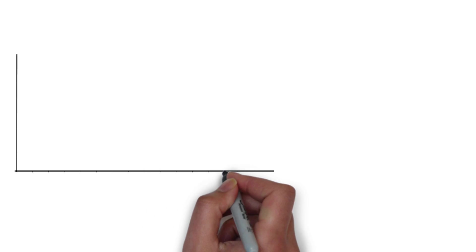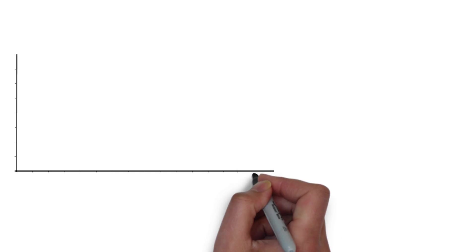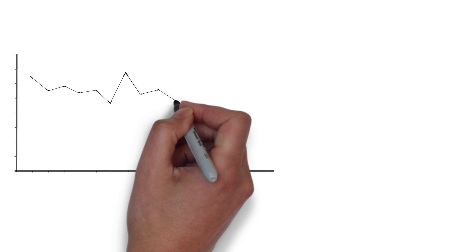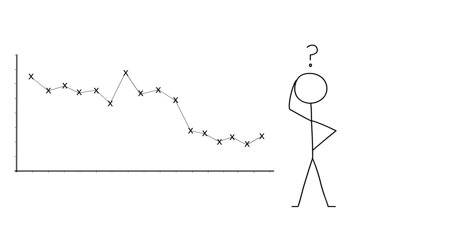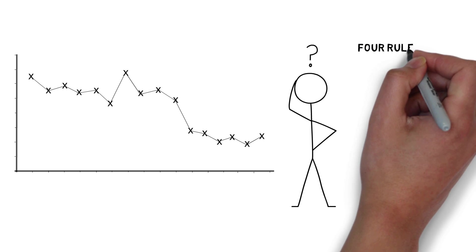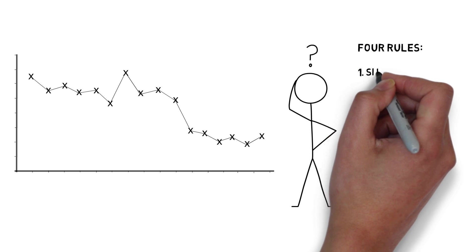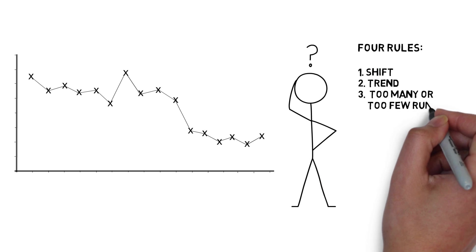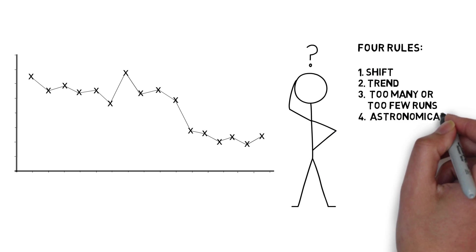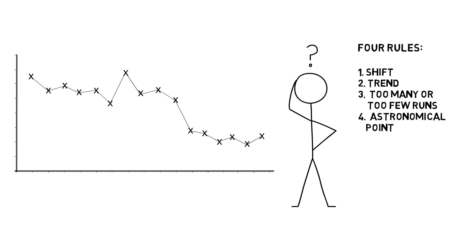Once a run chart has been built, analysis and interpretation can begin, and conclusions can be drawn about the changes that have been tested. As it can be difficult to decide whether the data points illustrate improvement, the use of probability-based rules can identify signals or non-random evidence of change. There are four rules that can be used with run charts: Rule 1, a shift; Rule 2, a trend; Rule 3, too many or too few runs; and Rule 4, an astronomical point.